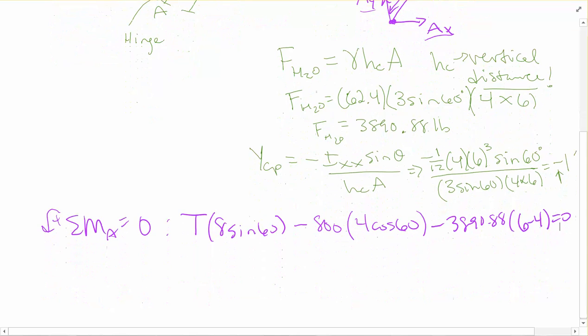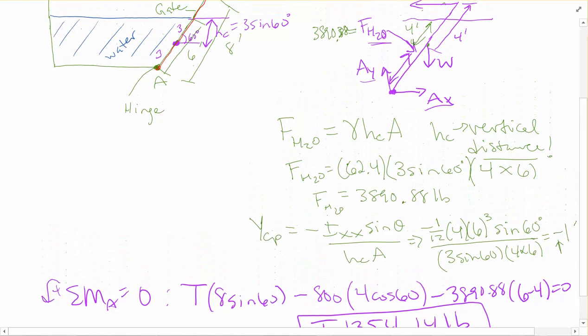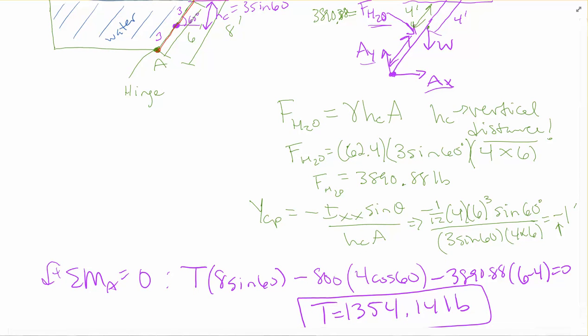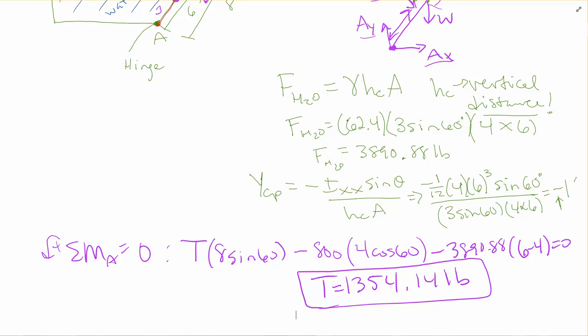So that leaves us with one equation and one unknown. So if you solve for that, you end up getting the tension is 1,354.14 pounds. All right, so that's the tension you get in the cable when you're at a 60-degree angle and your gate is 6 feet under the water. That's what you get.